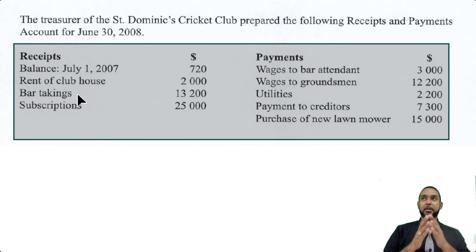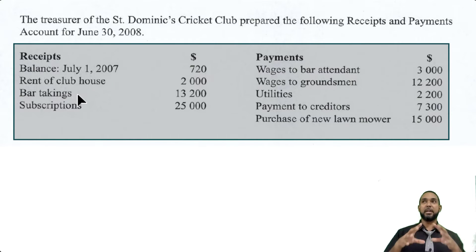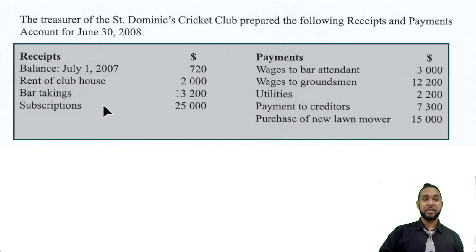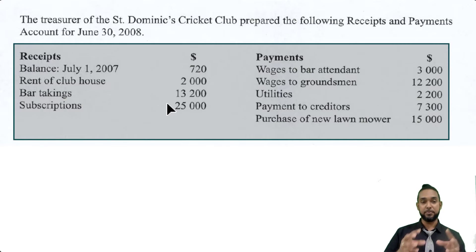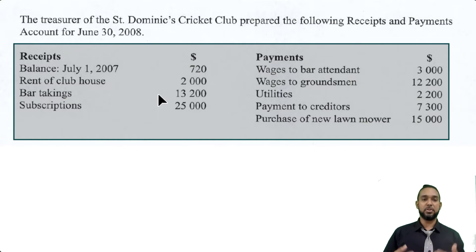Bar takings — takings is just cash sales at the bar. These non-profit organizations don't buy things to resell or provide services to make a profit; they're simply there to provide a place for their members to come and engage in some activity. In this case it's a cricket club. They rely on subscriptions, which are basically membership fees — that's the major source of revenue for this type of entity. These entities would normally have a cafeteria, bar, or concession stand, and the takings there from members buying food and drink provide additional revenue.